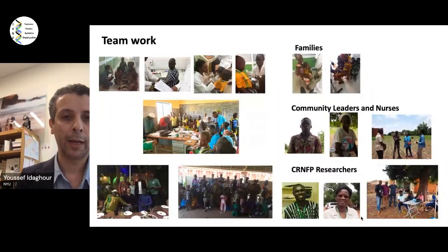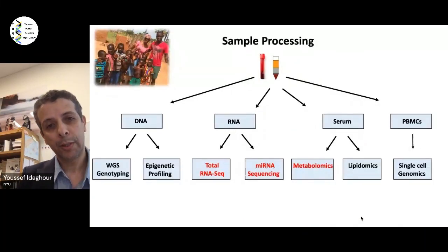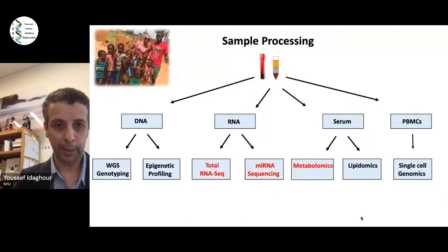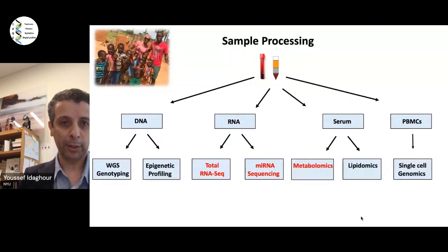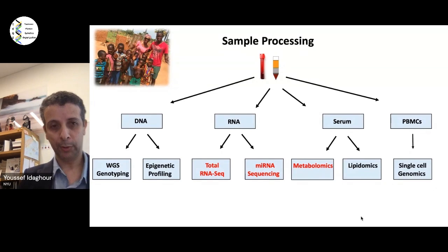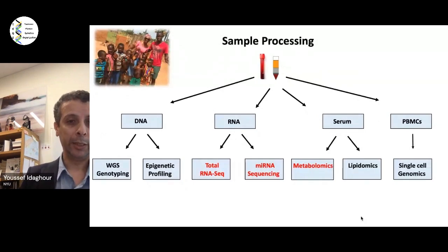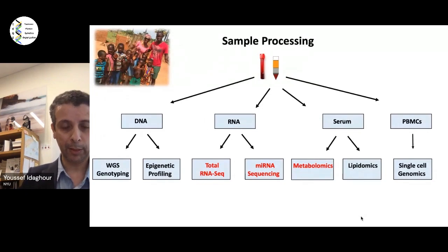In terms of technical approaches, we try to maximize how we use biological samples. Our focus is blood-stage malaria. We collect blood samples and developed protocols to do DNA work, RNA work, serum analysis, and PBMCs from relatively small blood volumes. Today I'm focusing mainly on work from the last five years, which is on total RNA-seq, microRNA, and metabolomics.